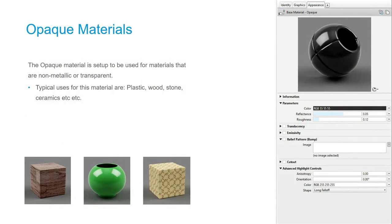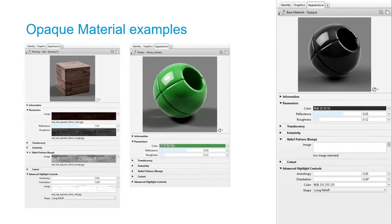Next up is the opaque material. These materials are good for anything that's not transparent, like ceramics, wood, carpets, these types of things. We can use these base materials to start from, or we can use pre-built materials, whichever you prefer. I really love this foam material — I use it all the time. Here you can see we have our albedo map, our roughness, our bump map, and our ambient occlusion map. For this plastic, we just have a color image and roughness values turned up to represent what an actual plastic material would respond to in real life.